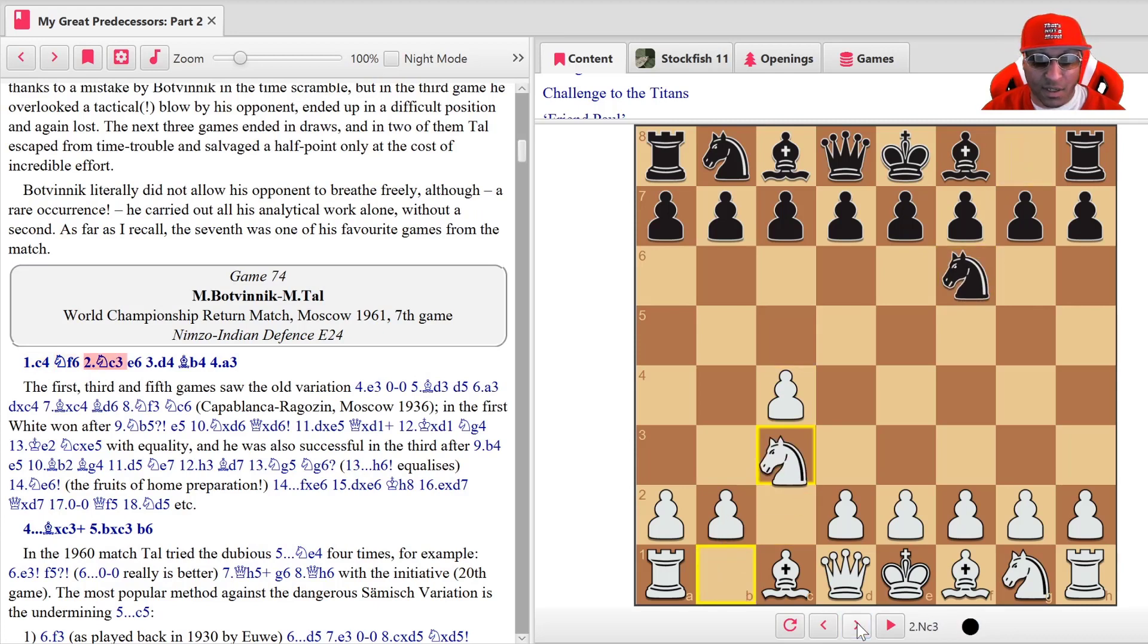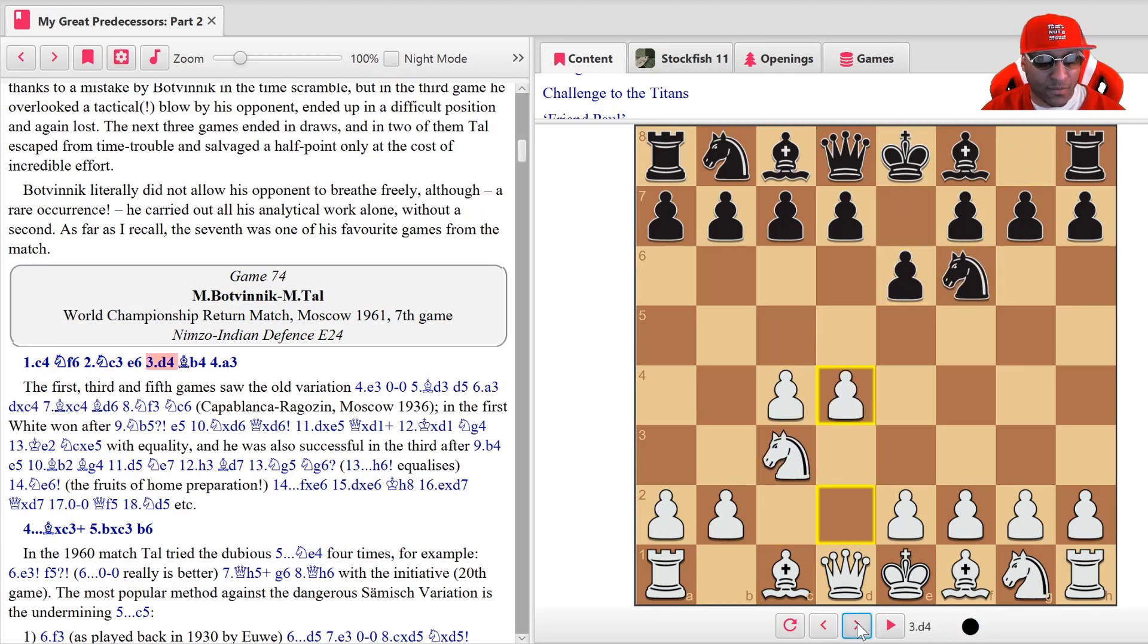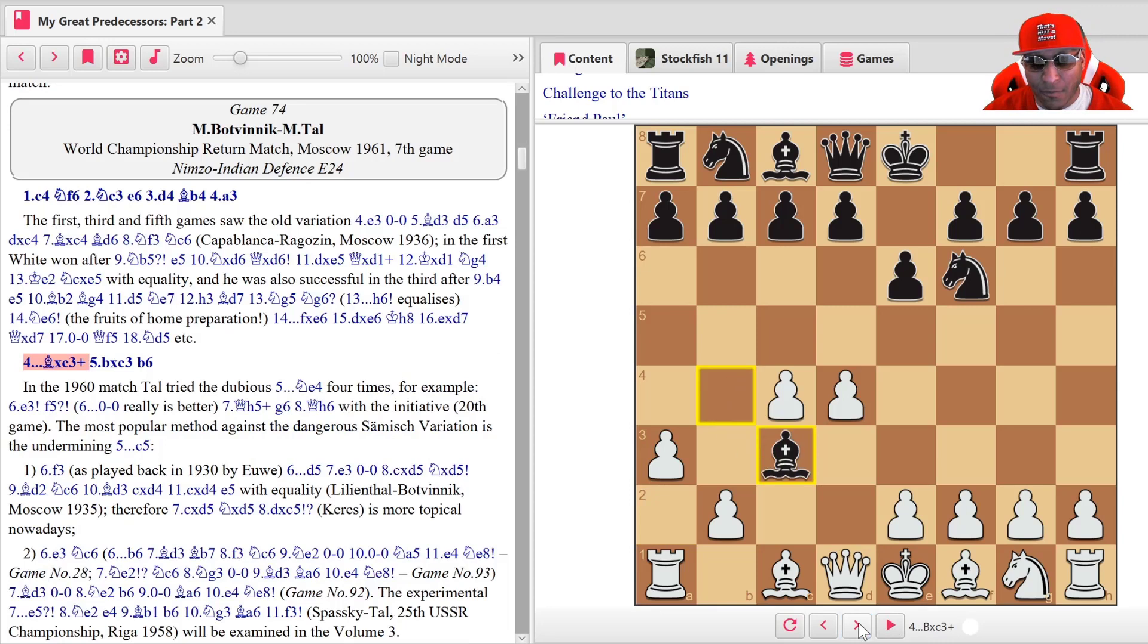Let's see what happens. C4 and knight f6, knight c3, so we got an English here. E6 and d4. After d4, bishop b4 and a3. This actually turned into a Nimzo-Indian, the a3 variation is what they like to call it.